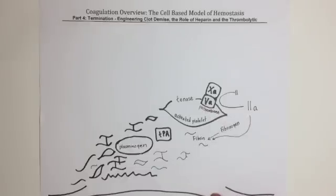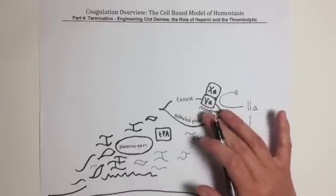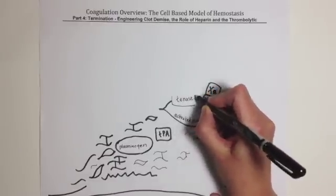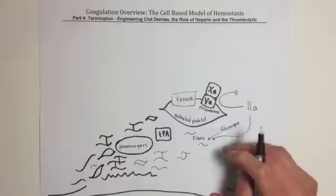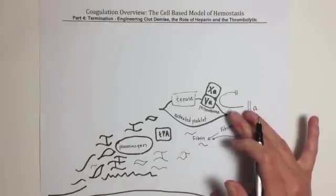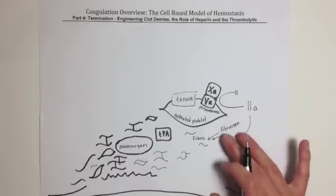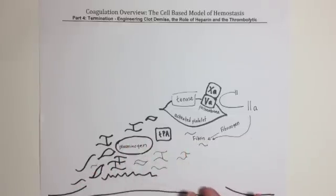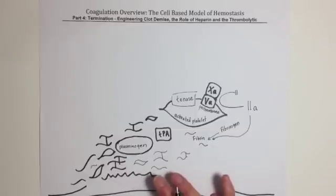We begin where we left off. Tenase and prothrombinase are active on the platelet surface generating large amounts of thrombin which is powering the production of a fibrin platelet mesh at the site of vascular injury. Clots however are formed to be temporary, so within this mesh the precursors to clot breakdown have been trapped during the process of formation.